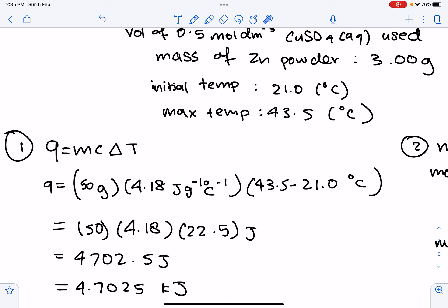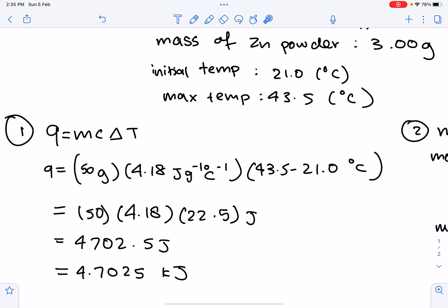And then, also, we're assuming that the density of the solution is 1 gram per cm cubed. Therefore, 50 cm cubed of solution has the mass 50 grams. And then, for the temperature, we have 43.5 minus 21 degrees Celsius. So, therefore, we have 50 times 4.18 times 22.5 joules, which gives us 4702.5 joules. And then, we divide that by 1,000 to get 4.7025 kilojoules, because this is what we'll need for our delta H reaction.